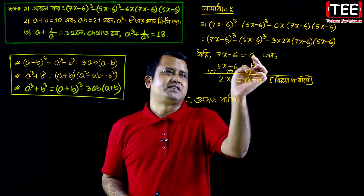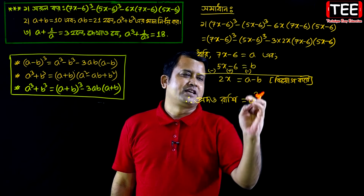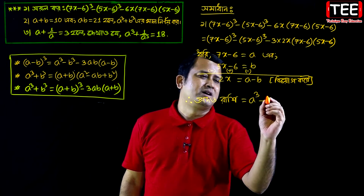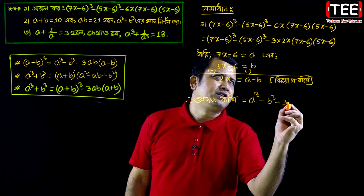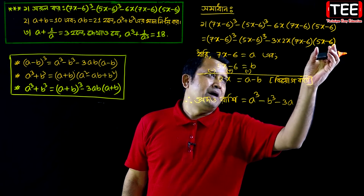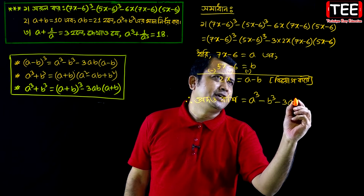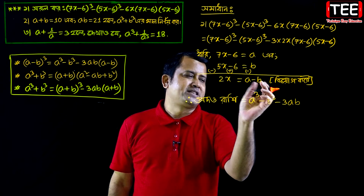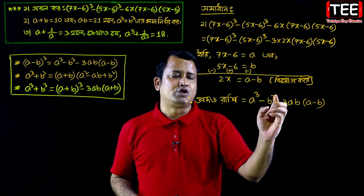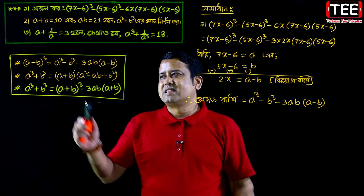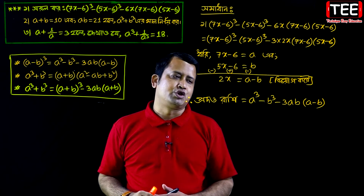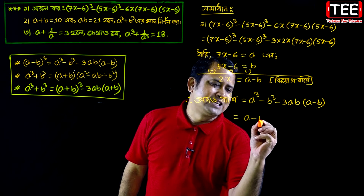Setting 7x minus 6 equal to a, and 5x minus 6 equal to b, and 2x equal to a minus b, we apply the formula: a cube minus b cube minus 3ab into a minus b equals a minus b whole cube. So the expression equals a minus b whole cube.